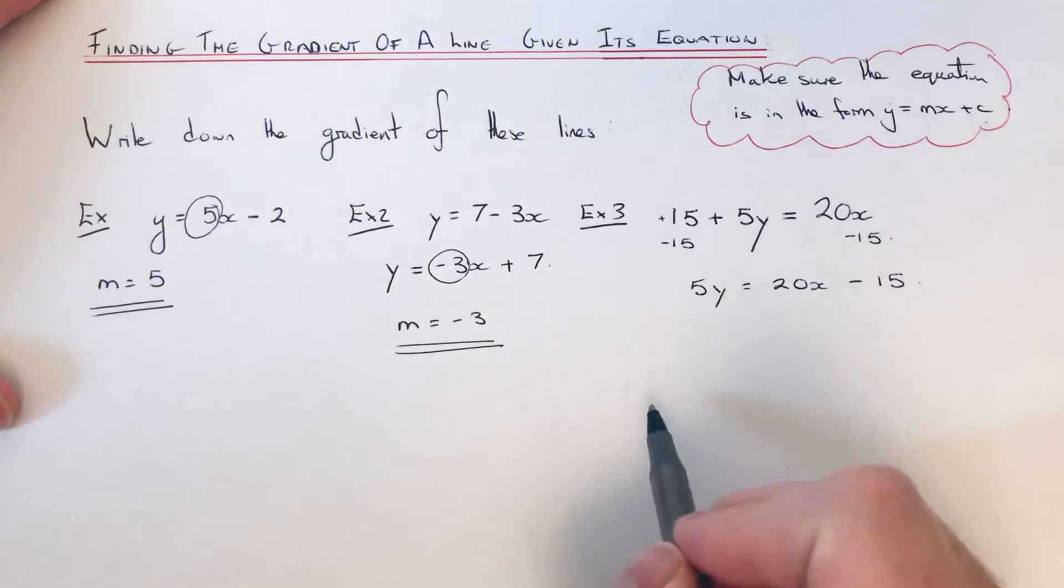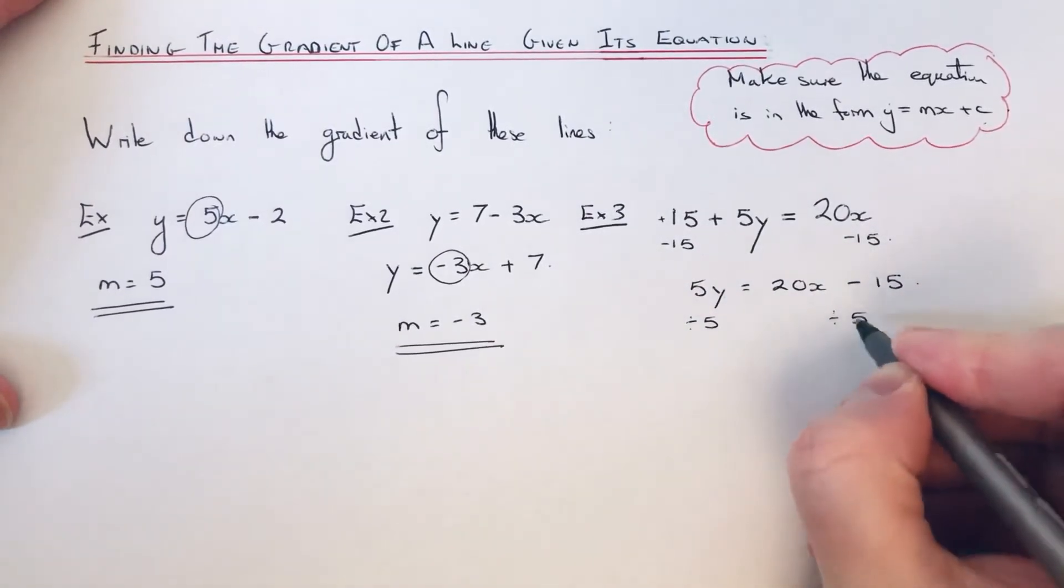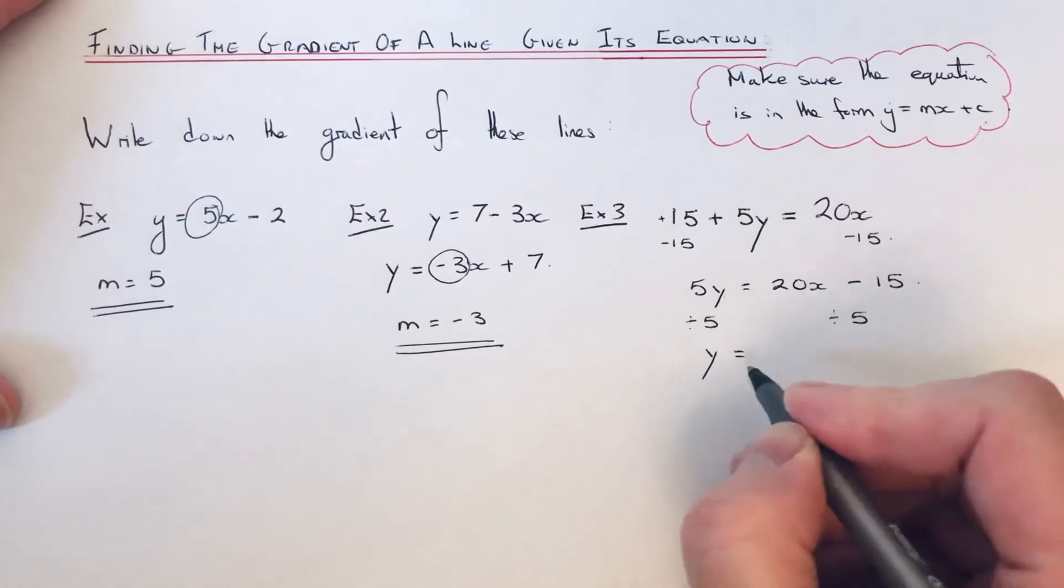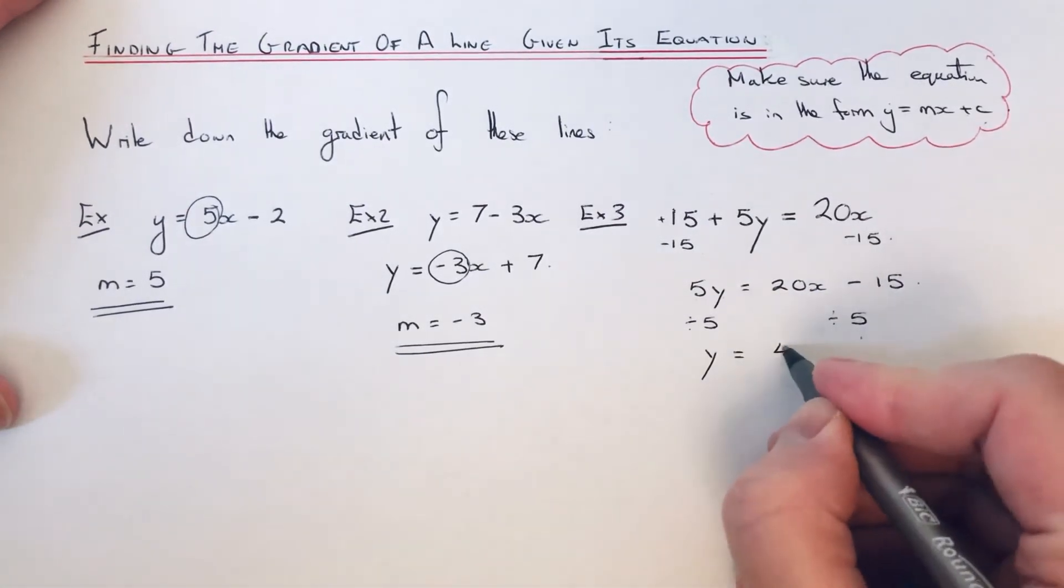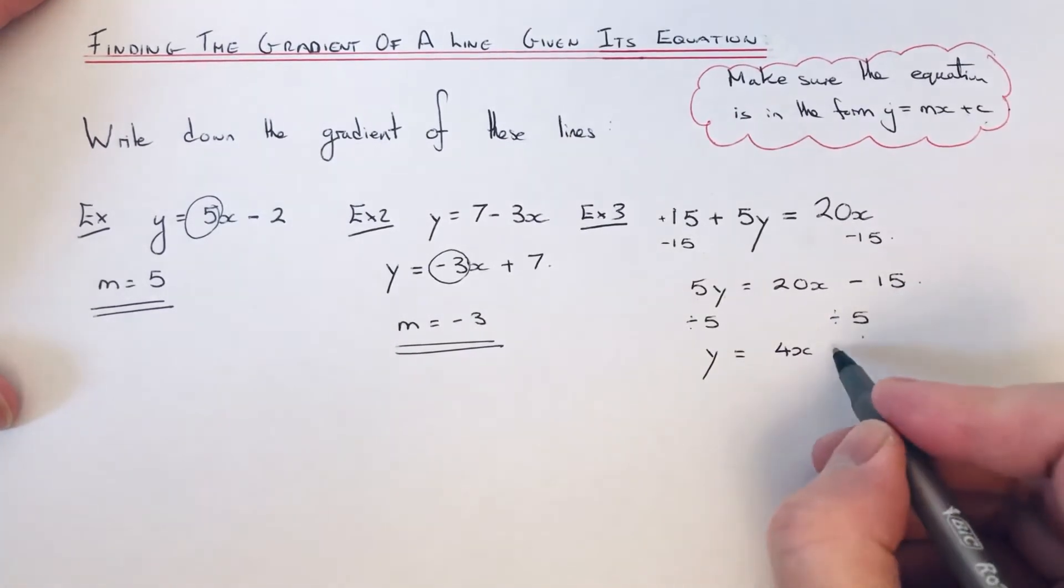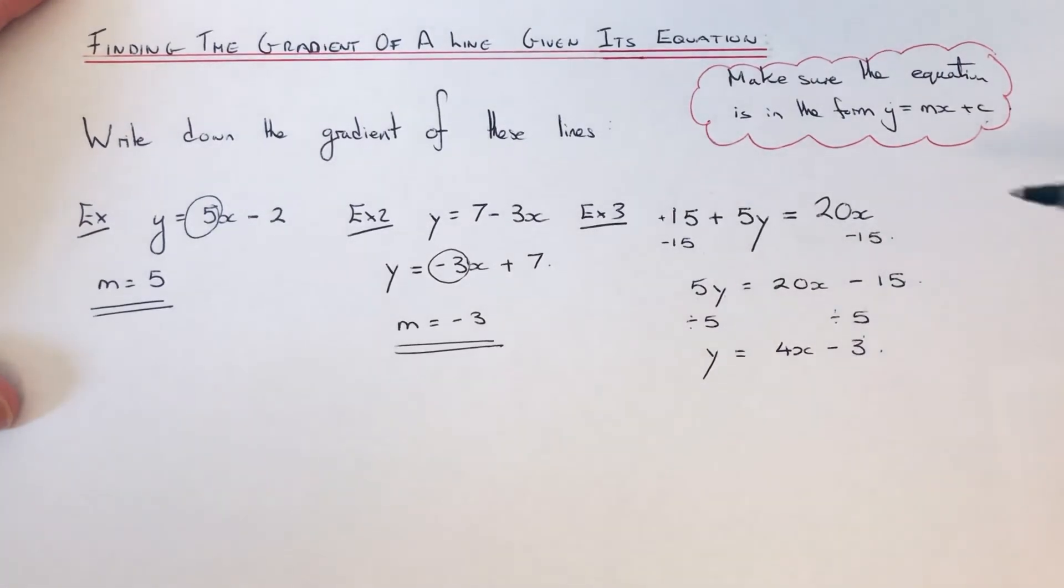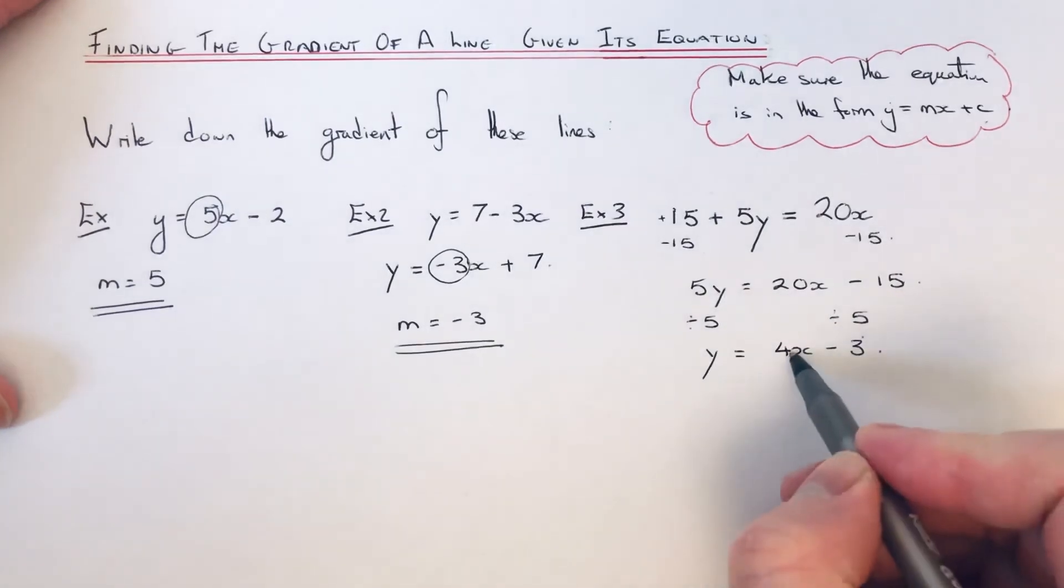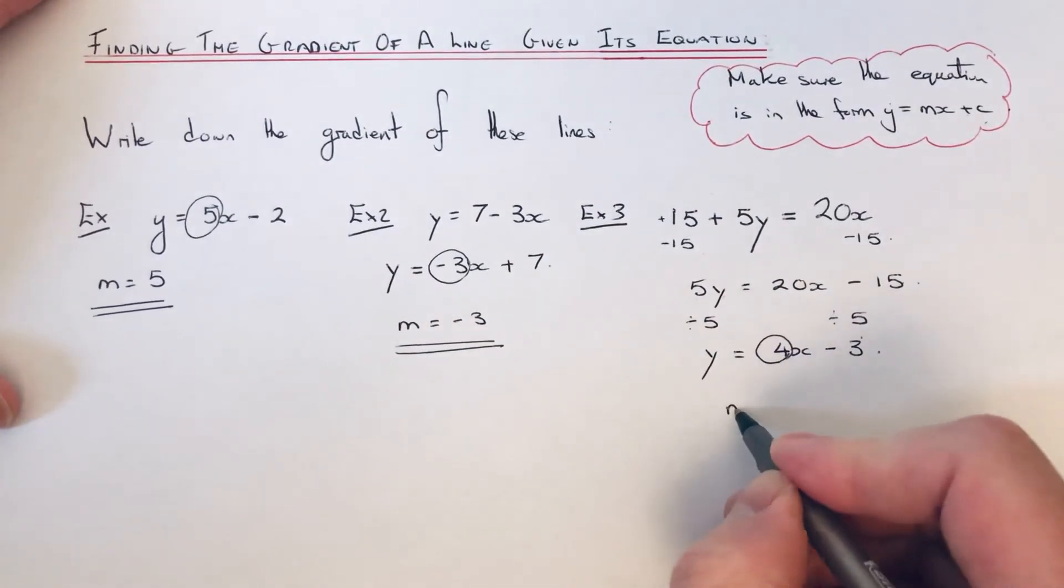y has now been multiplied by 5, so if we divide both sides by 5, that will give y equals 20x divided by 5 will be 4x and minus 15 divided by 5 is minus 3. We've now got it in this order, y equals mx plus c. We just look for the number before x, which is 4 this time. So m equals 4.